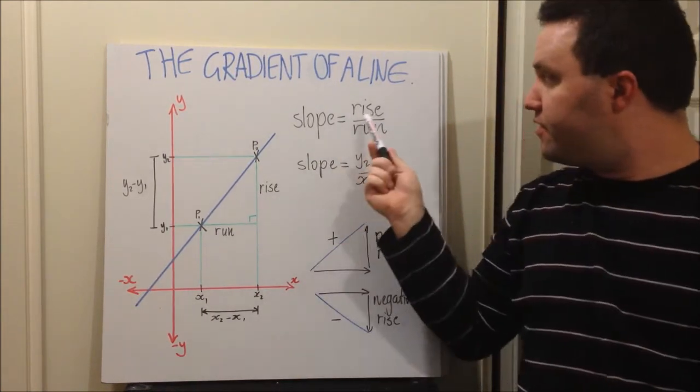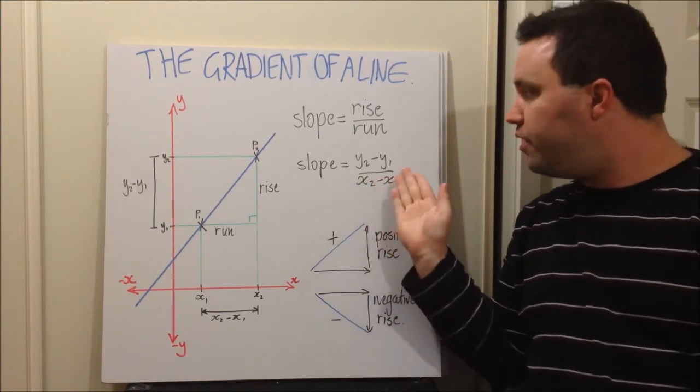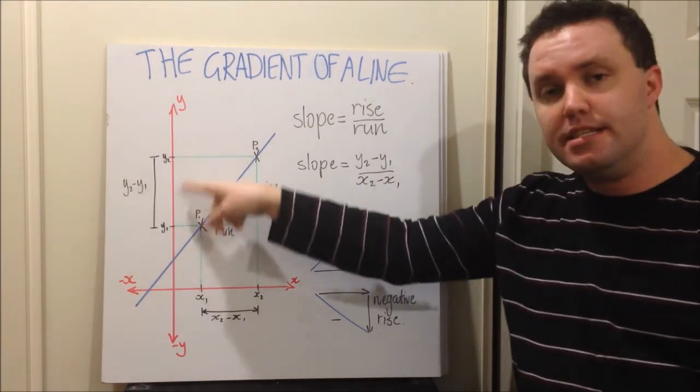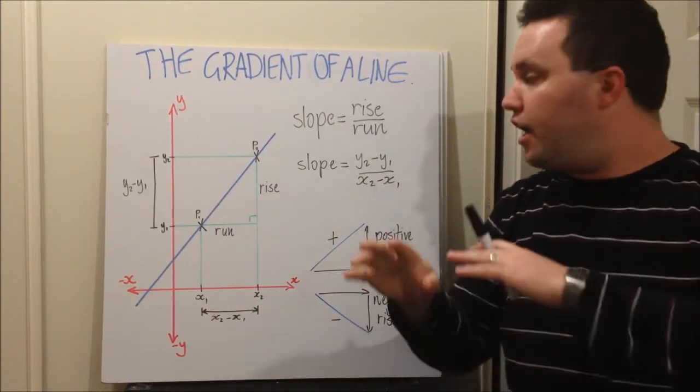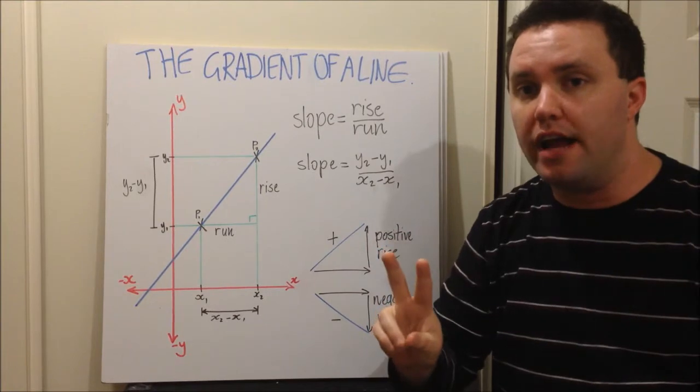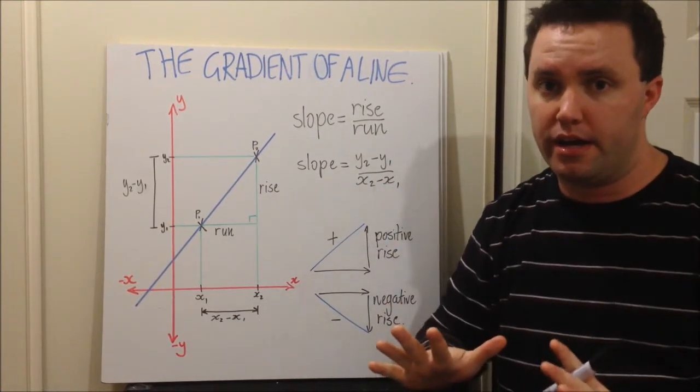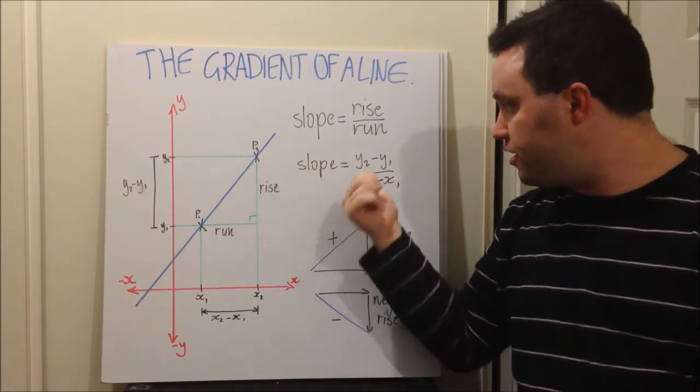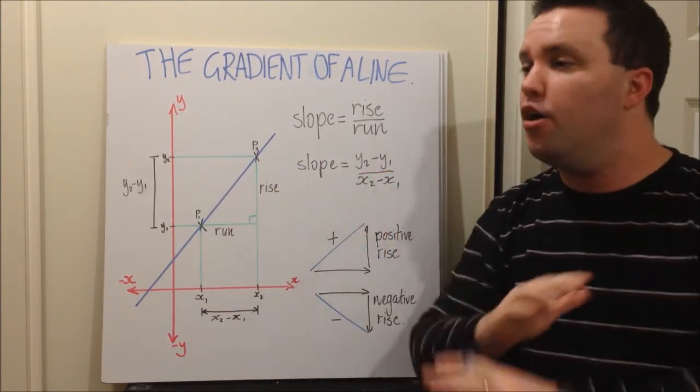So instead of having rise over the run, we can have y2 minus y1, which is this distance here, over the run, x2 minus x1, which is this distance here. If you have two points of a line, using this method will always work, as long as you substitute the correct x1, x2's into the right place here, always going to work.